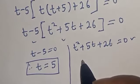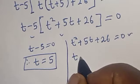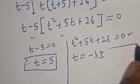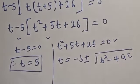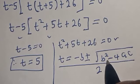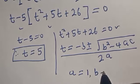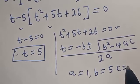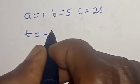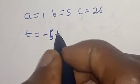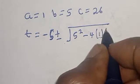The second case is a quadratic equation which can be solved using the quadratic formula. The quadratic formula is t equals minus b plus or minus the square root of b squared minus 4ac, over 2a. Here a equals 1, b equals 5, and c equals 26. Substituting: t equals minus 5 plus or minus square root of 5 squared minus 4 multiplied by 1 multiplied by 26.